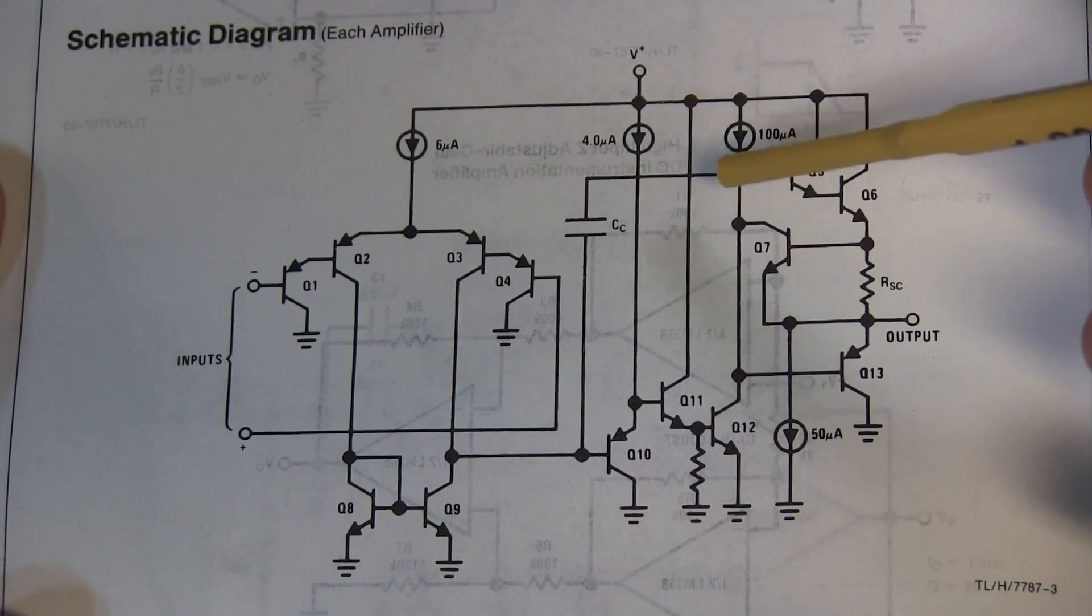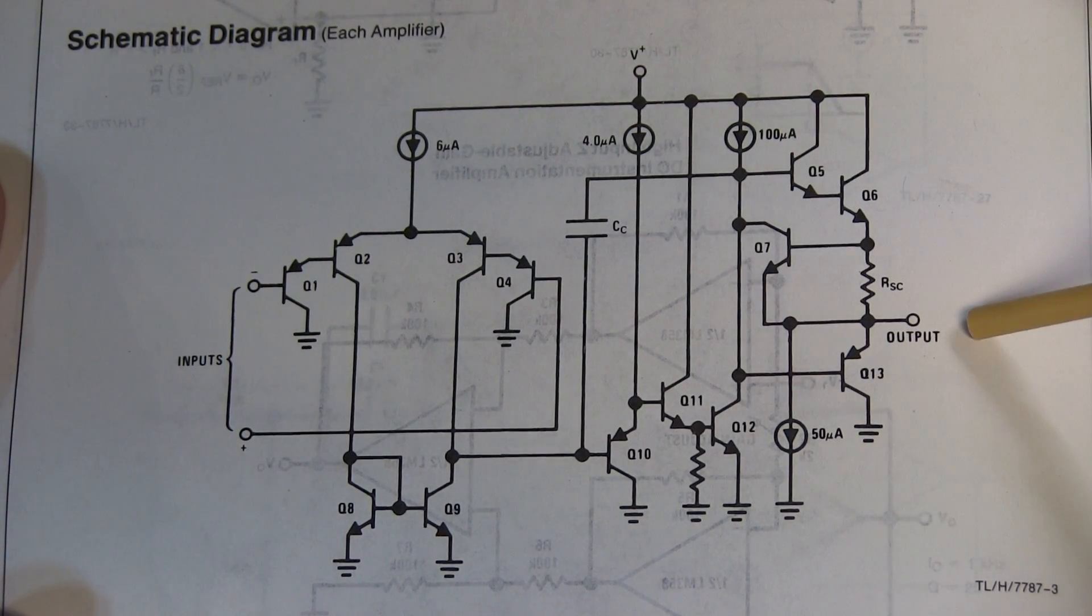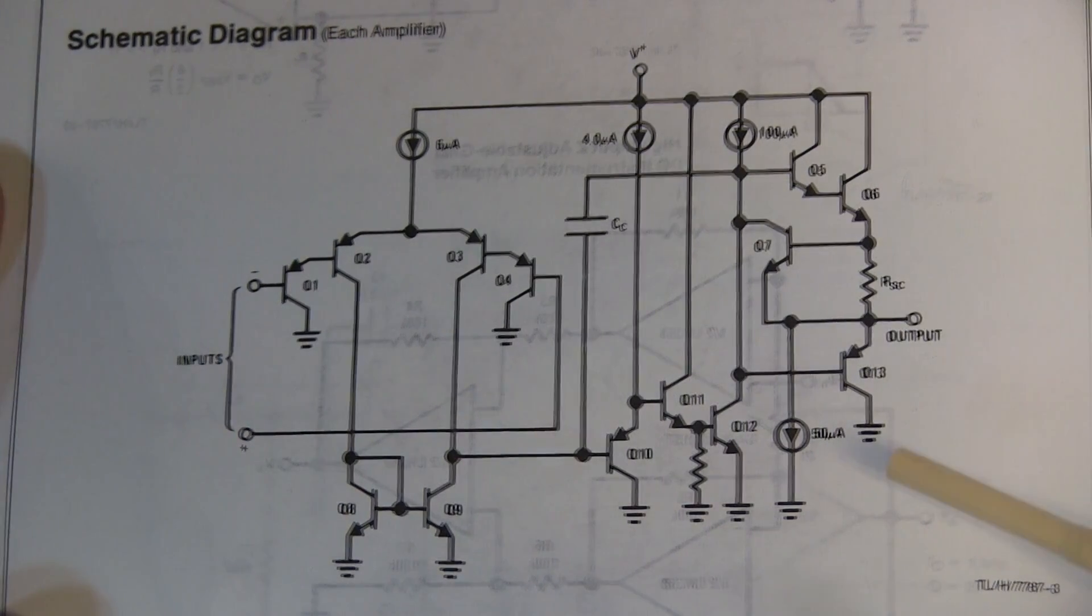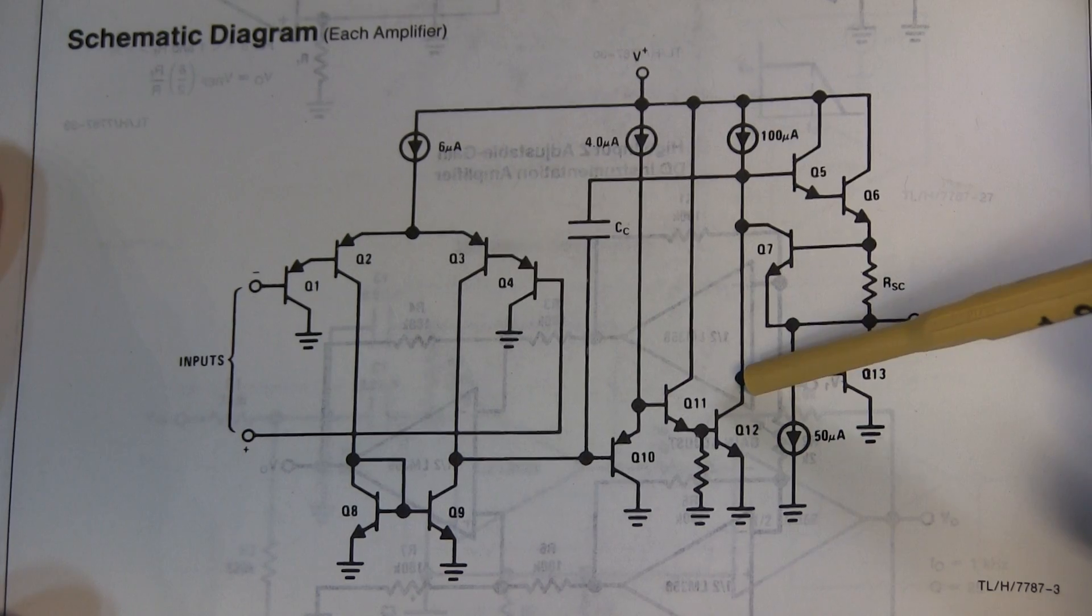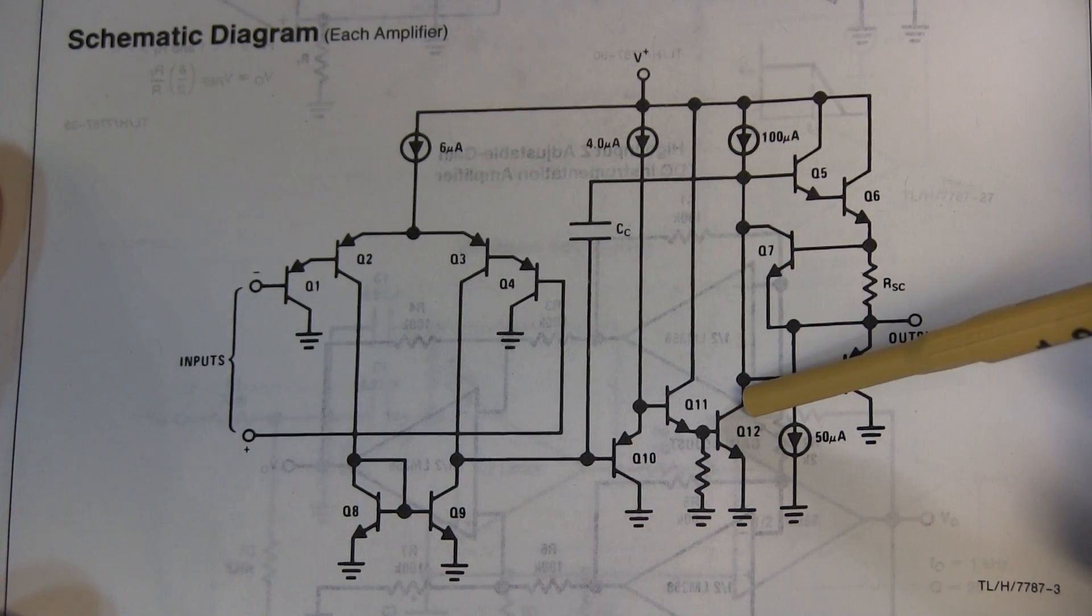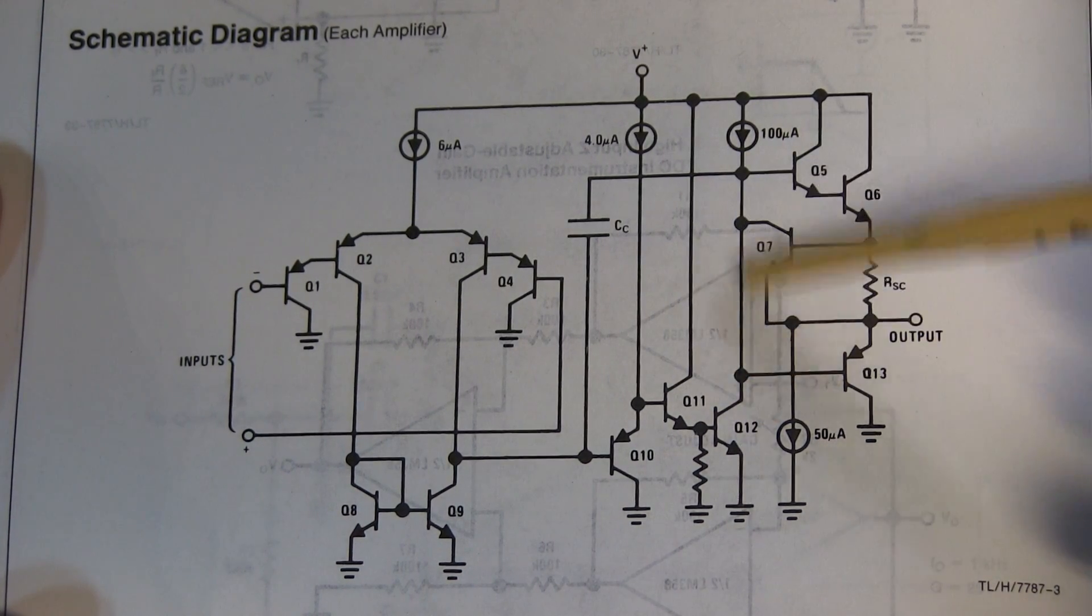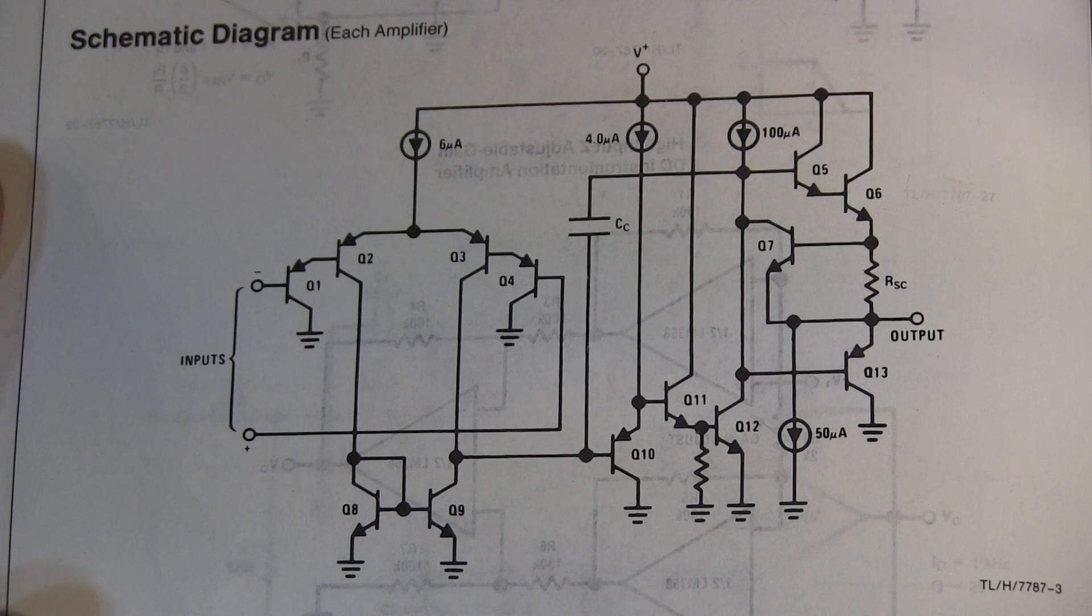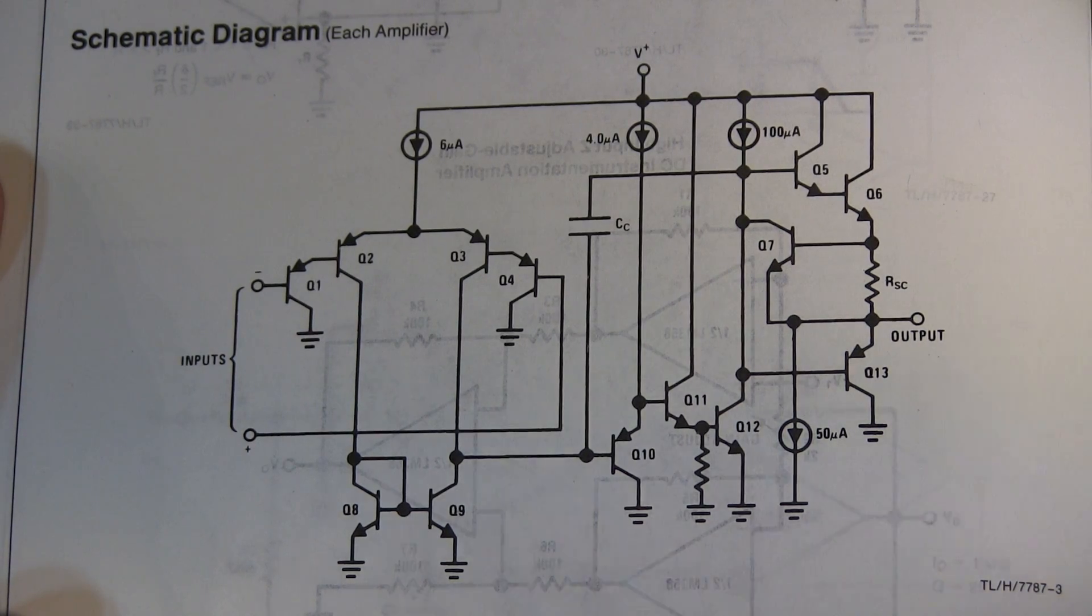We're crossing over between an output sourcing situation to an output sinking situation. Now how quickly Q12 can swing its collector between those two states is going to be somewhat limited by the internal compensation capacitor. So there's going to be some finite time when both output transistors are off and the output isn't doing anything. And that's really what causes the crossover distortion that we see in the waveform.